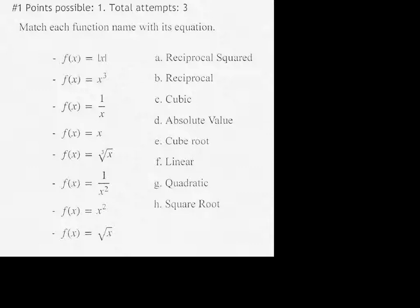This is number one and we're matching each function name with its equation. So the first one with the two straight lines around the x, that is the absolute value function, so that's d. x cubed is called the cubic function, so c. And 1 over x is the reciprocal function, so that's b. f of x equals x, that's the identity function, so that's linear.